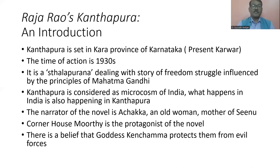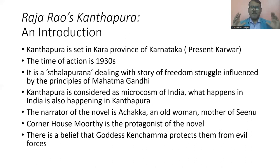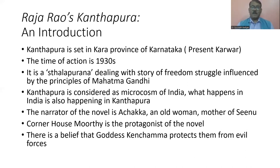The period from 1920 to 1947 was dominated by the Gandhian movement. This novel speaks about the historical conditions of India during the 1930s, and it was published in 1938. Raja Rao tried to describe the story of India's freedom movement through the story of Kanthapura. Kanthapura runs like a Sthala Purana, dealing with the story of the freedom struggle influenced by the principles of Mahatma Gandhi. A great critic says that Kanthapura is a microcosm of India — incidents like Jallianwala Bagh massacre, Chauri Chaura incident, roundtable conferences, and Dandi March are indirectly described in the novel.